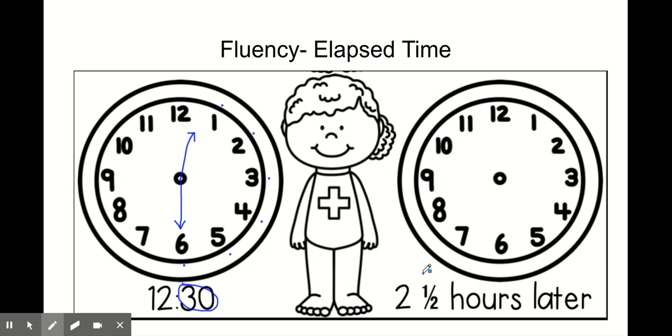But now we need to adjust it two and a half hours later. Well, if I'm going to do two and a half hours later, I know that 30 minutes is half an hour. So I'm going to start where my minute hand is and move it 30 more minutes. Remember, we're counting by fives starting at the 7. 5, 10, 15, 20, 25, 30 more minutes would put my minute hand at the 12.